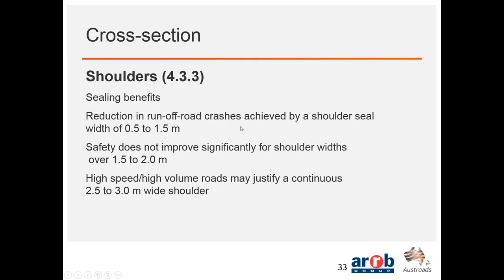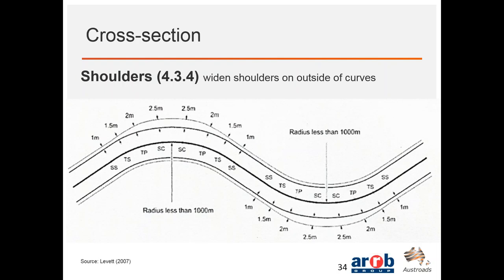Research by Stephen Levitt in New South Wales found that widening the shoulder on the outside of curves provides significant safety benefits. An example shows a 1 metre shoulder being widened to 2.5 metres on the outside of a curve. This supports a risk-based approach: where providing wider shoulders everywhere isn't possible, focusing on outside curve locations — where drivers are more likely to wander off the through lane — can be particularly effective in enabling vehicle correction.